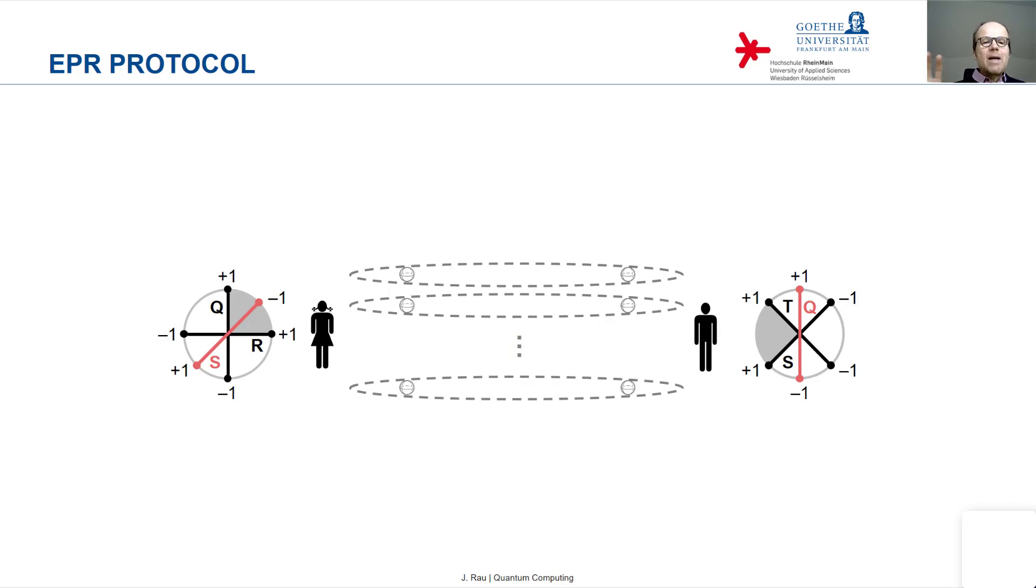Now, it may happen that for one Bell pair, Alice and Bob measure the same observable.